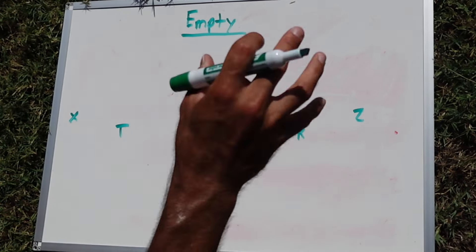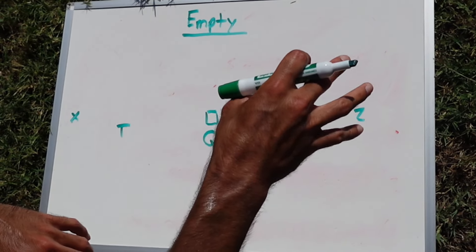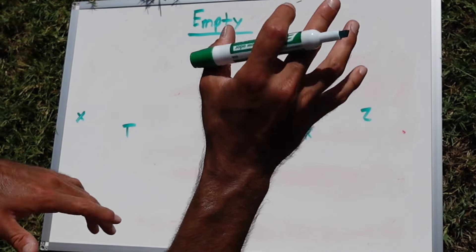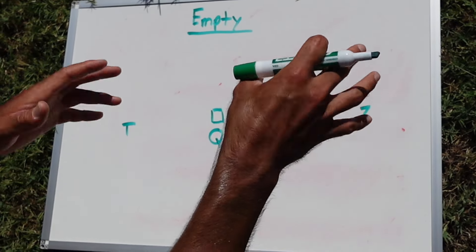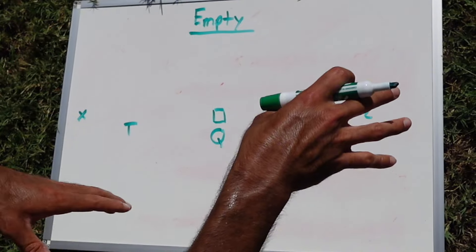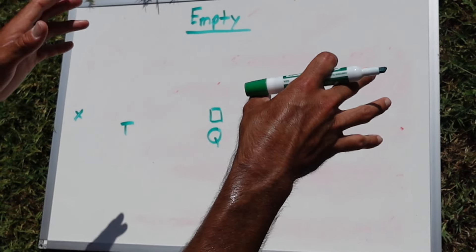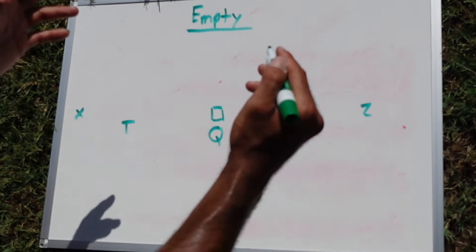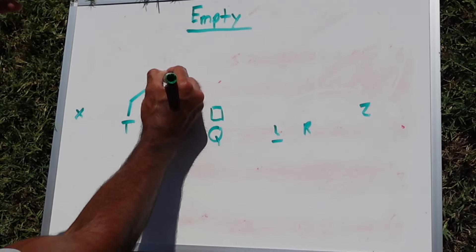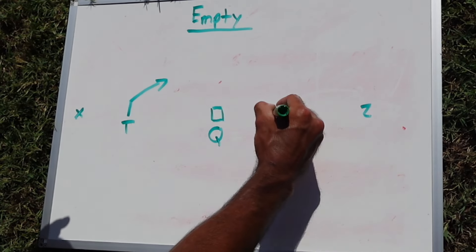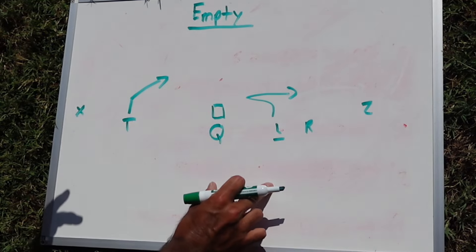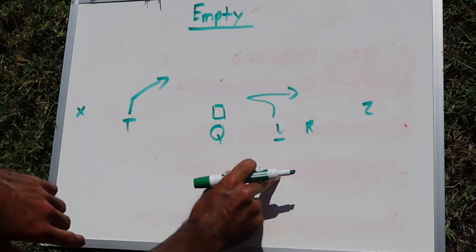This is very common in air raid offenses — offenses that like to pass the ball maybe 30 to 40 times a game. They come out in empty because you get a lot of one-on-one opportunities. Maybe they're playing a cover one defense and you have a mismatch where your slot receiver is on a linebacker. You could run a quick slant from the running back or a whip route from the slot. An empty formation is a great formation in many air raid offenses.